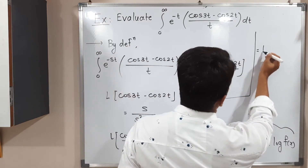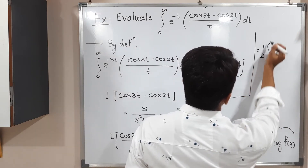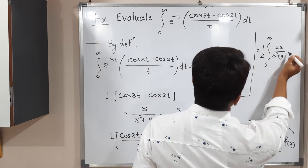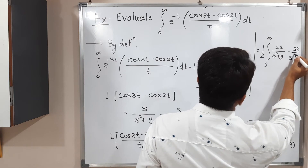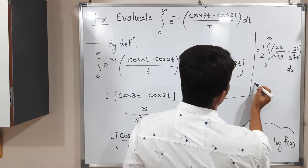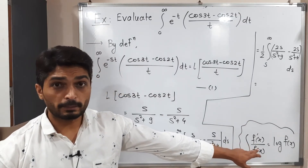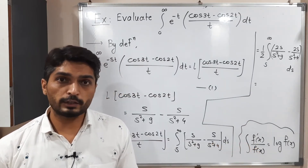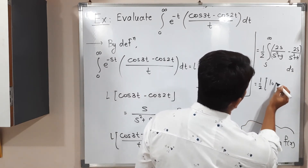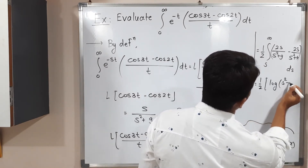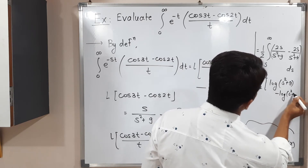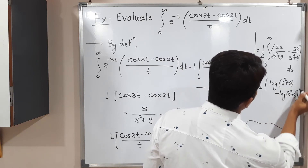So this equals (1/2) times the integral from s to infinity of [2s/(s² + 9) minus 2s/(s² + 4)] ds, which gives (1/2) times [log(s² + 9) minus log(s² + 4)], evaluated with limits s to infinity.